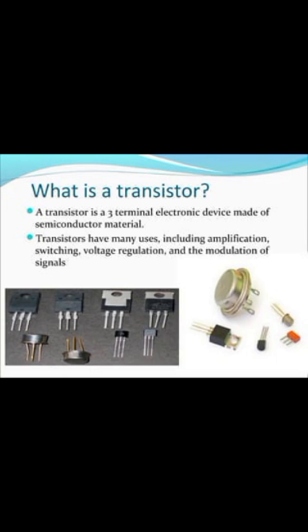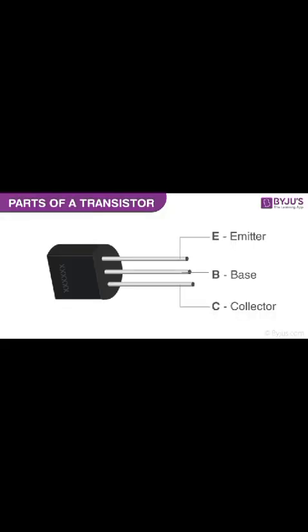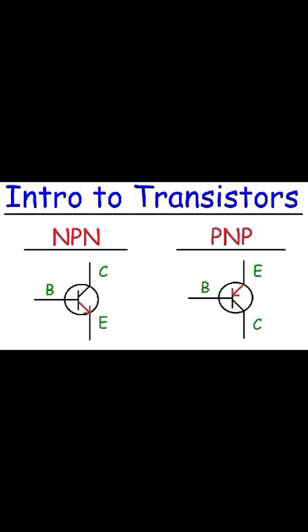We add two thick semiconductors and one thin semiconductor to form a transistor. It has three parts: the upper thick layer is called the emitter, the middle thin layer is called the base, and the third thick layer is called the collector. The transistor has two types.